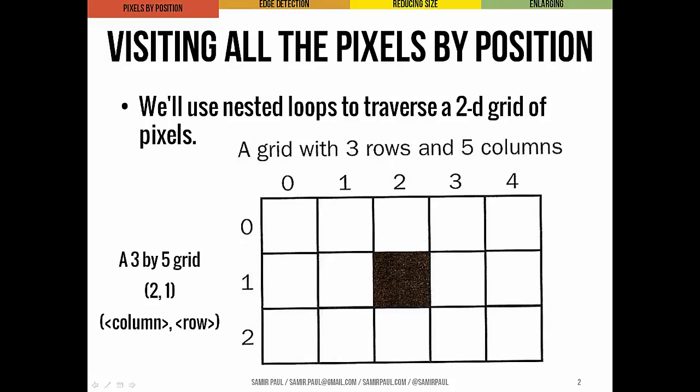Some image processing algorithms use a nested loop structure to traverse the 2D grid of pixels. This image shows that grid. Its height is three rows numbered 0 through 2, and its width is five columns numbered 0 through 4. So we call this a 3 by 5 grid, and each pixel is accessed with a pair of coordinates using the form column comma row.